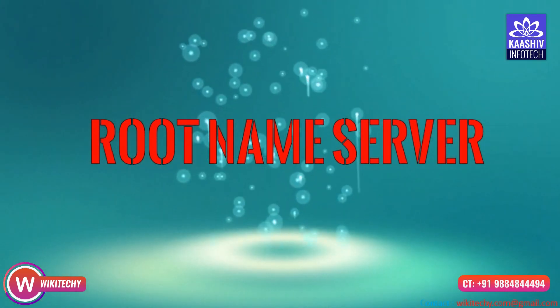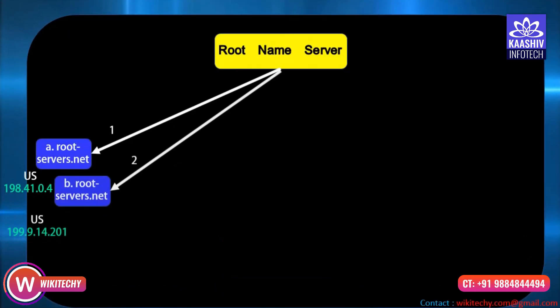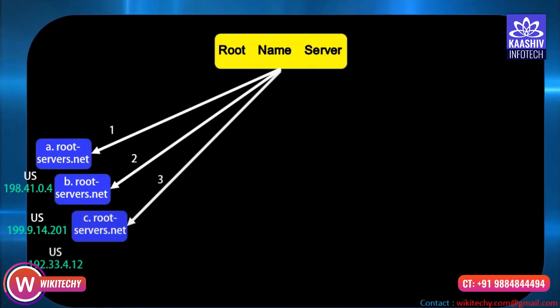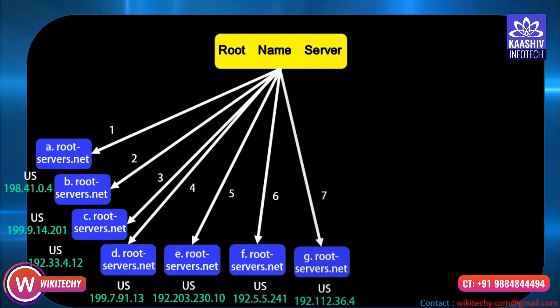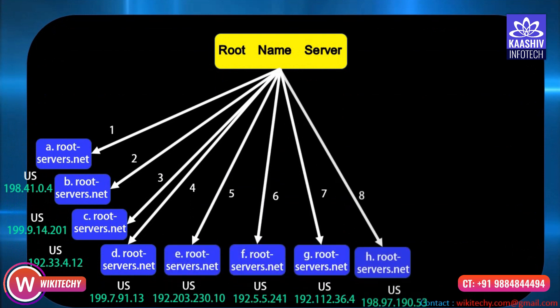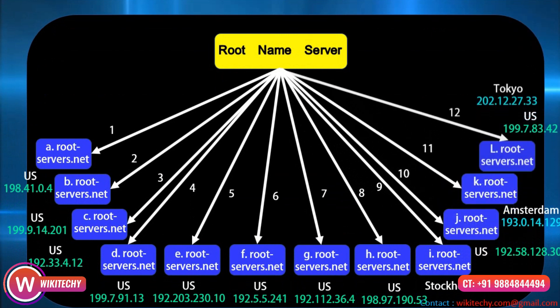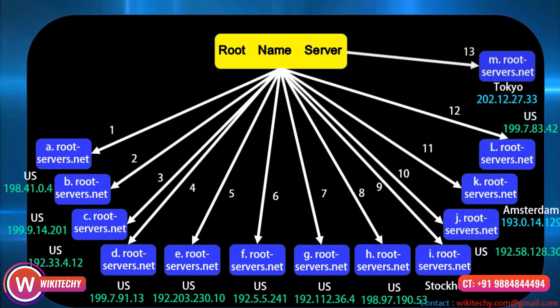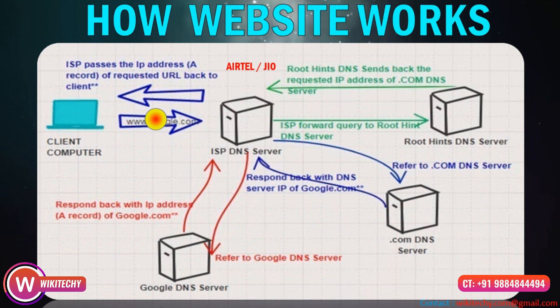The most important thing is: there are 13 root name servers in the world. There is a shocking report - most are in the US and America. There is a server in Belgium, Amsterdam, Netherlands, and Japan. There are 3 servers outside the US and 10 servers in America.